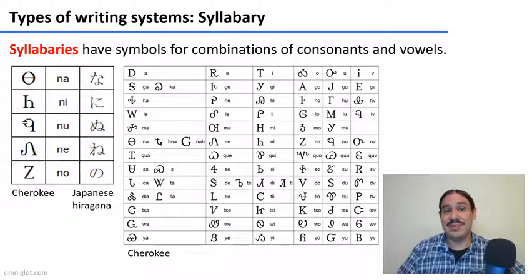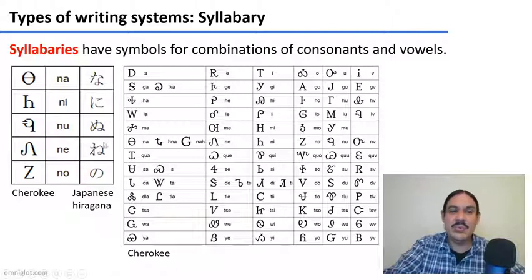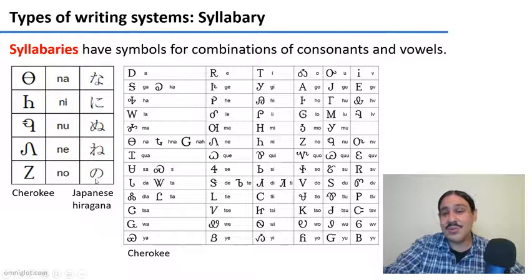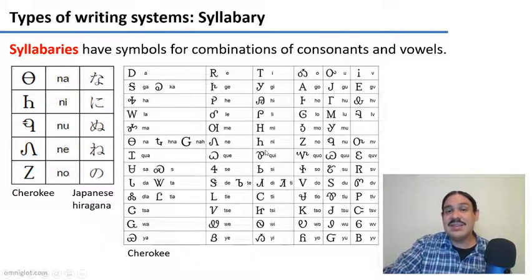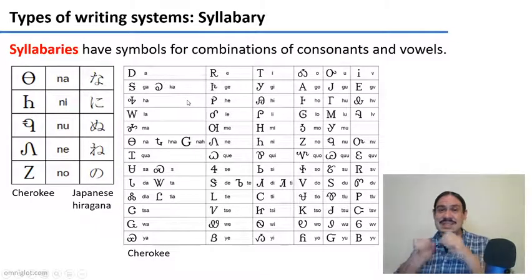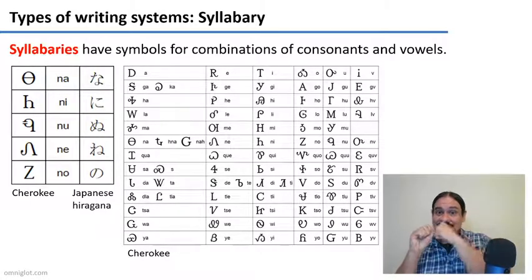Syllabaries are really cool — they represent the whole syllable. Japanese, for example, has about 45 possible syllables and each has a different symbol. You can see that among symbols sharing a consonant like 'n', there's nothing visually in common — the 'n' is implicit in all of them, as are the vowels. The system on the left is Cherokee, a writing system from the Cherokee community in North America. It is extremely interesting because it's one of only two writing systems from the Americas — the other being Maya hieroglyphs.